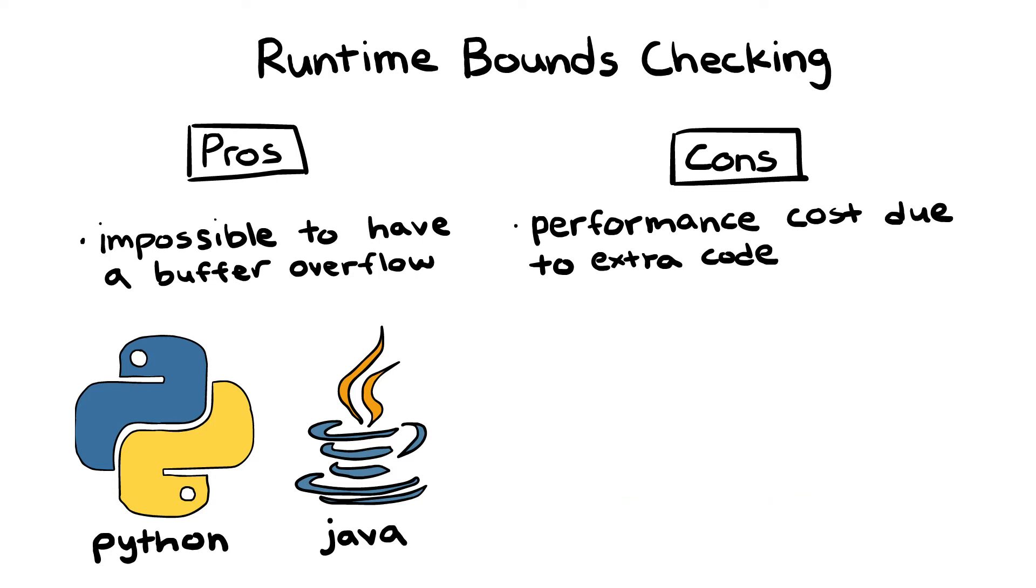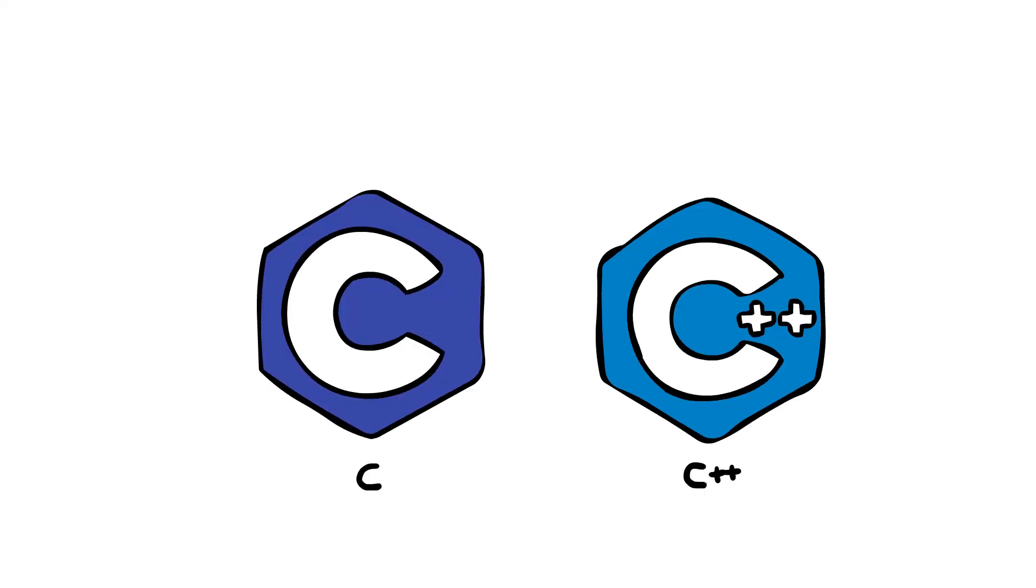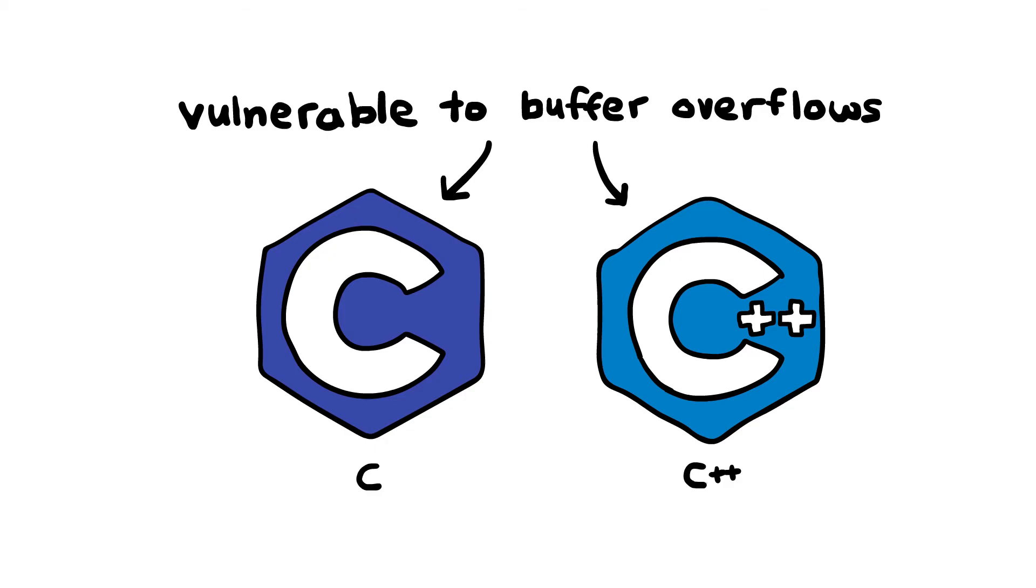And thus programming languages like C and C++ have chosen not to use runtime bounds checking by default. These languages will be at the center of our discussion, since they're the only languages in which a buffer overflow is even possible.